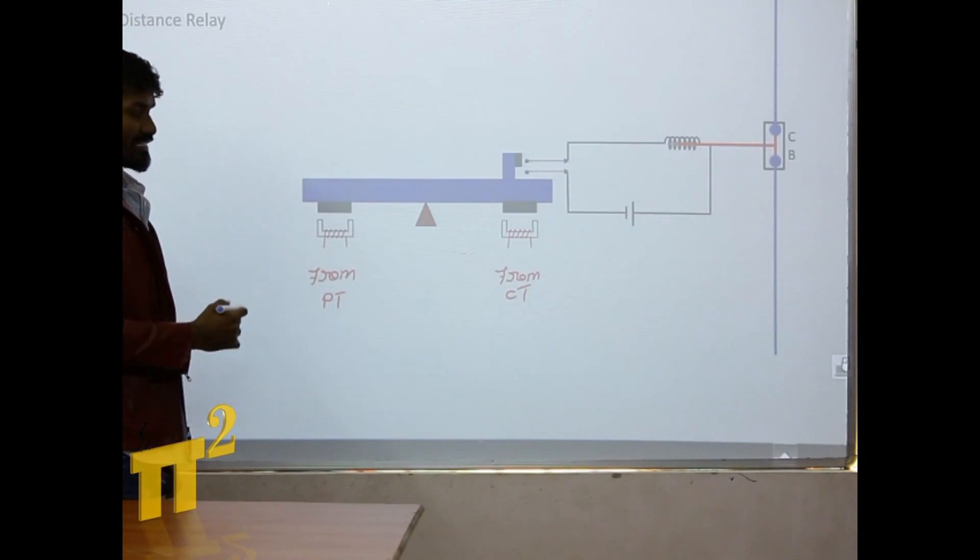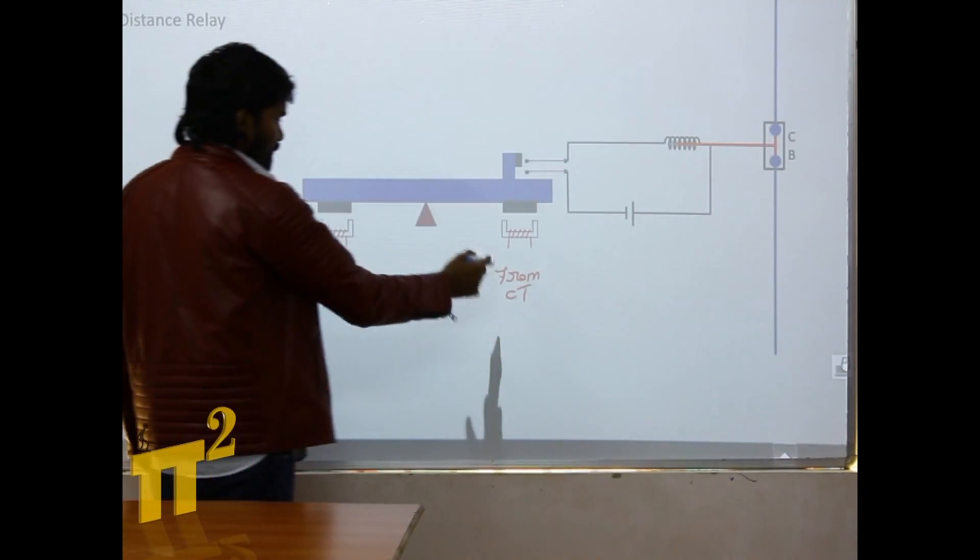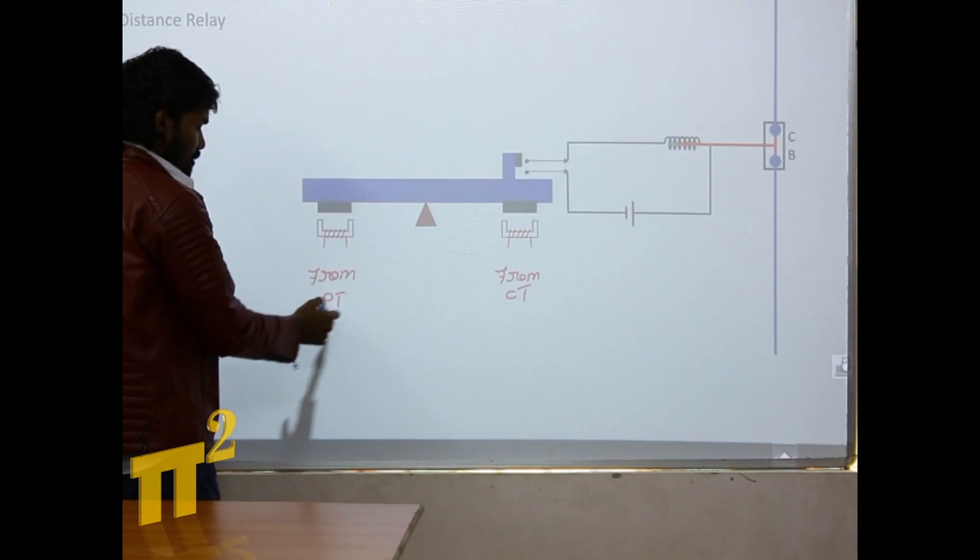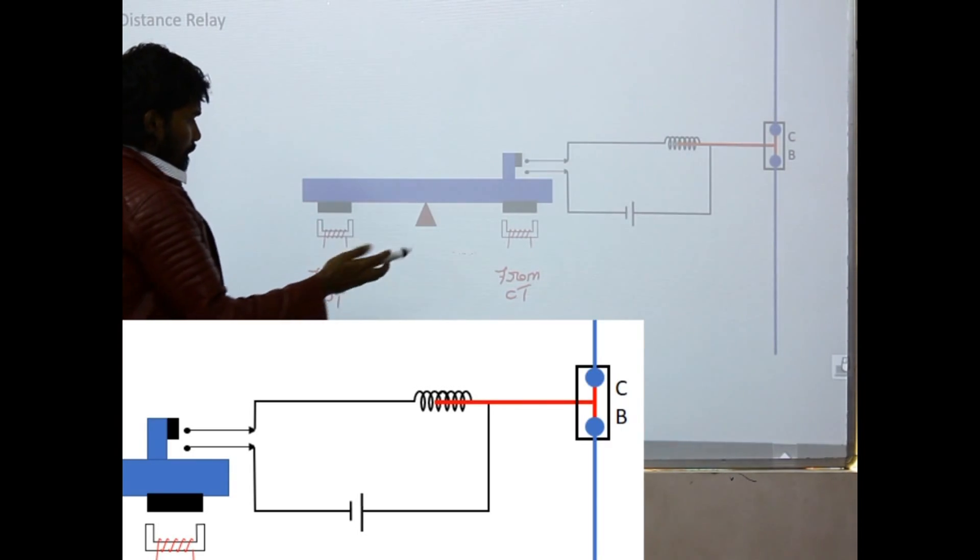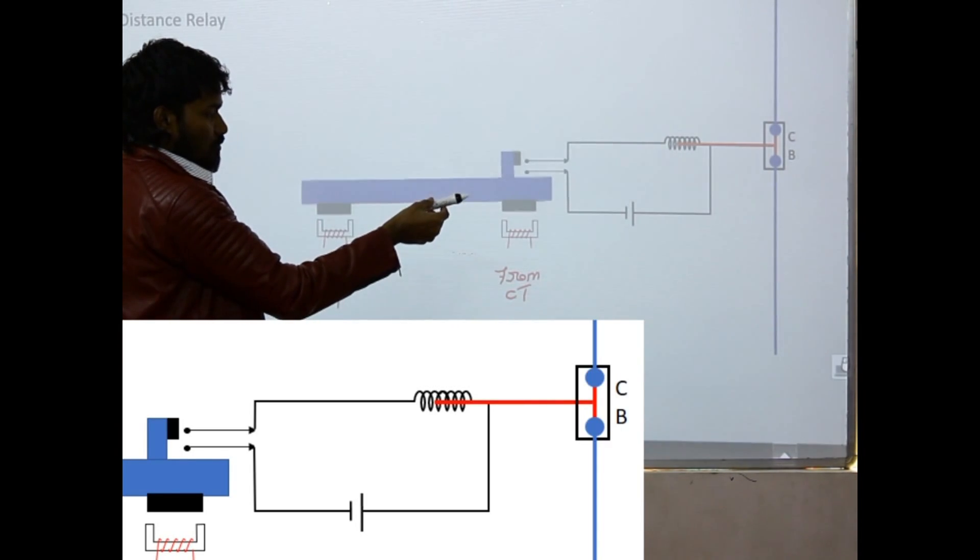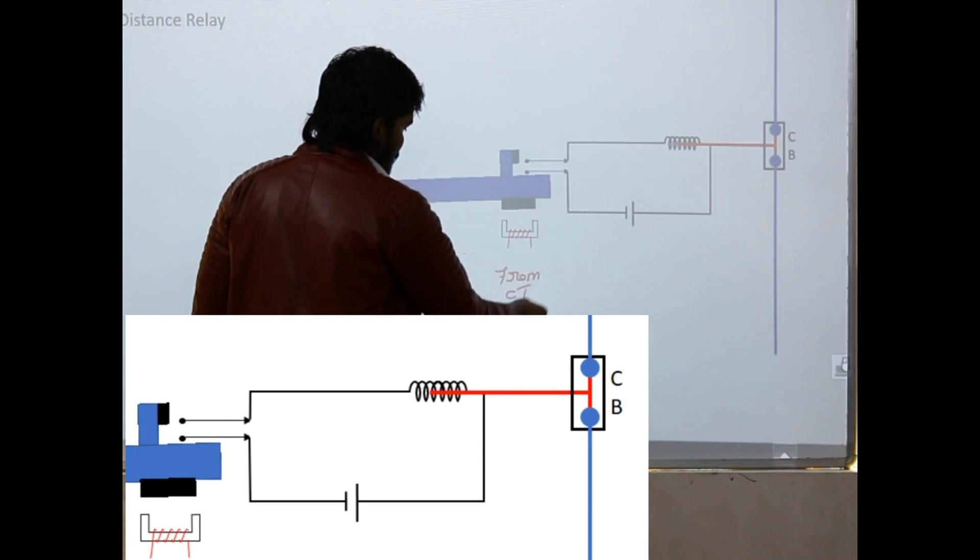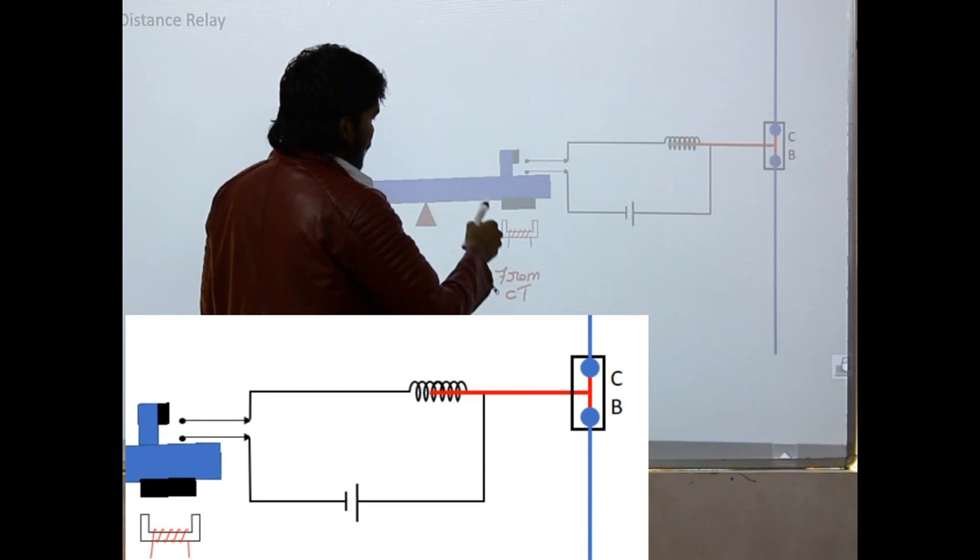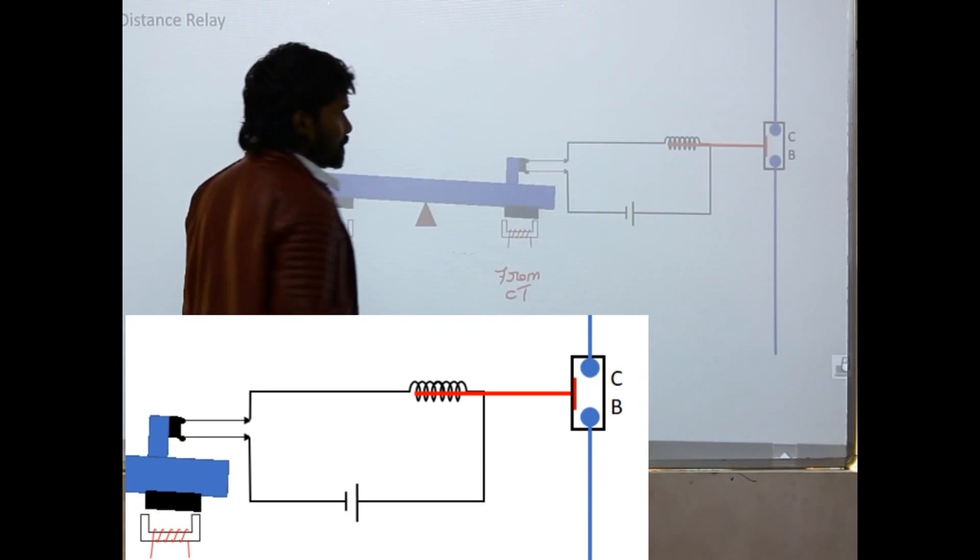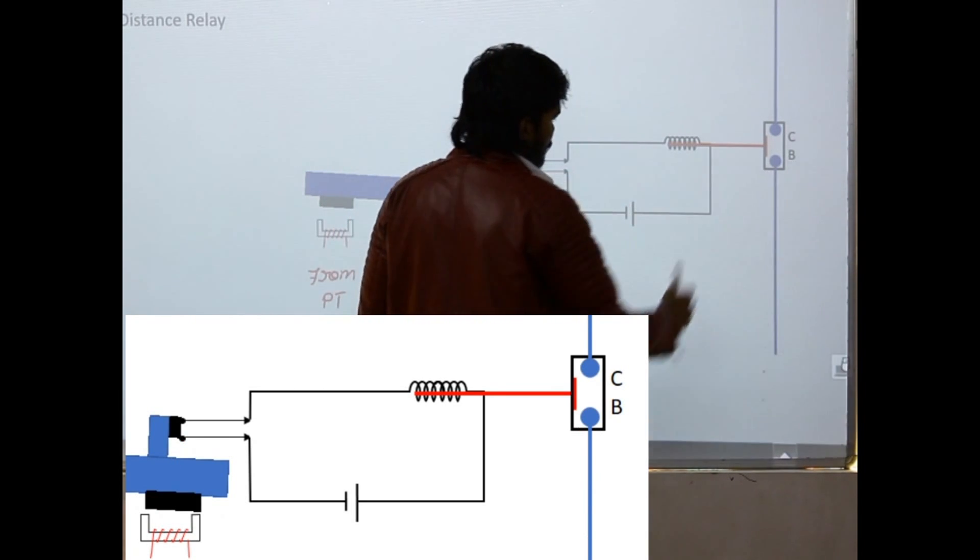When there is less current, when PT force is more, then this balance will tilt this way. When the CT force is more, this will be shorted and the circuit breaker is opened.